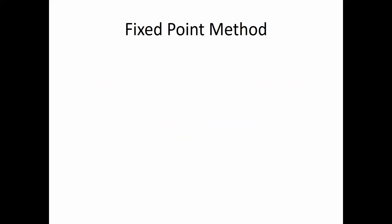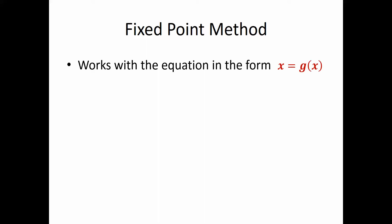The fixed point method depends on first having your equation in a specific form: on the left-hand side you have x, and the rest of the equation is put as g(x), which is a function of x. For instance, if you want to solve a simple equation — and of course this is a very simple example — you can put it in this form.